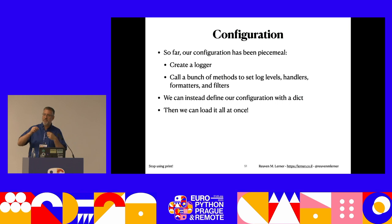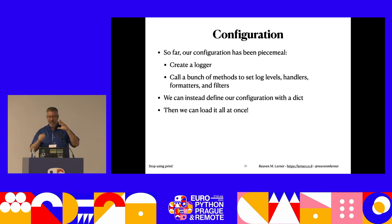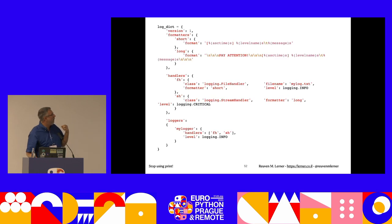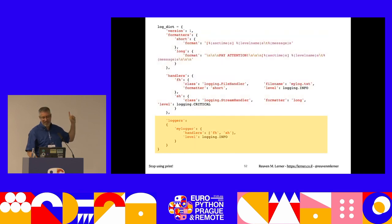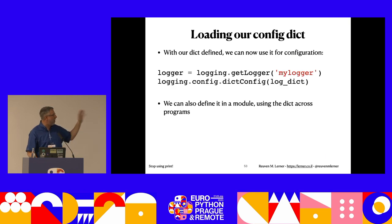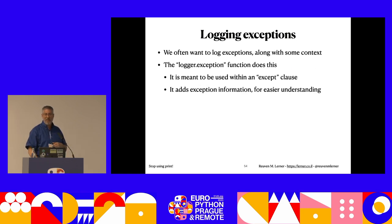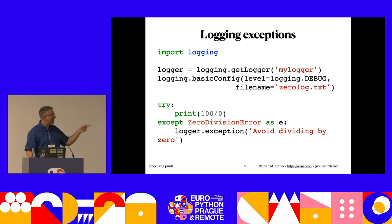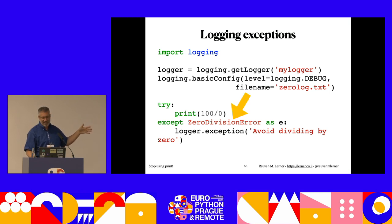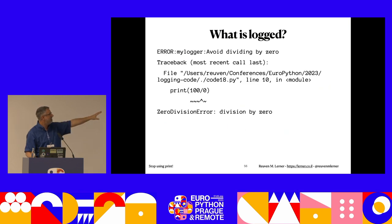For configuration, instead of setting things piecemeal, you can define a dictionary with version, formatters, handlers, and loggers, then load it with logging.config.dictConfig(). Put it in a module and load it whenever you want. Also, for logging exceptions, use logger.exception() inside an except block - it knows what to do, logging it appropriately with the full traceback.